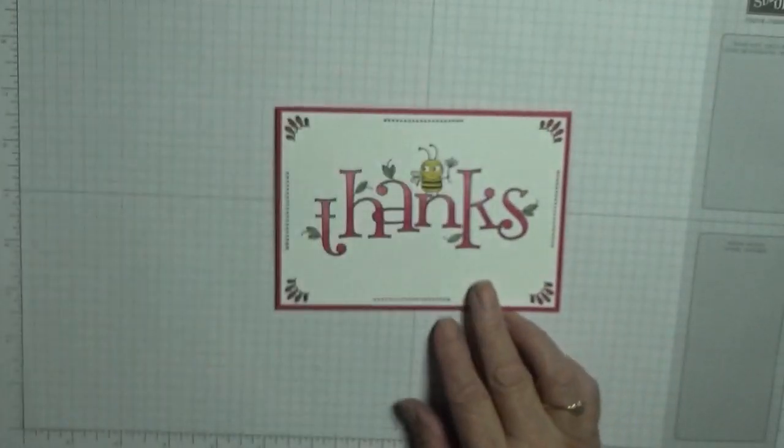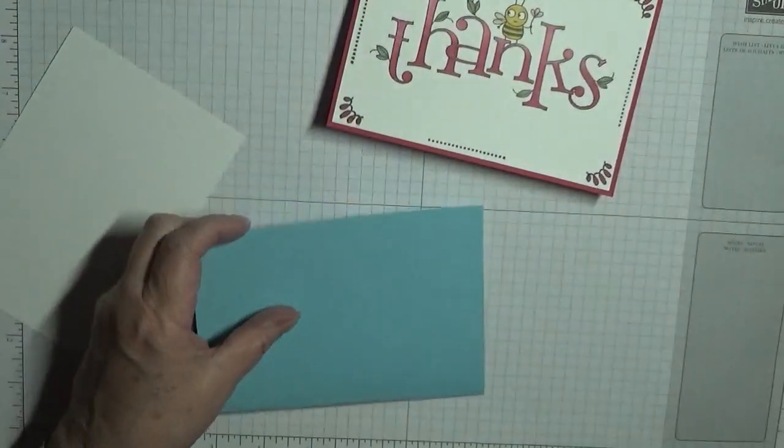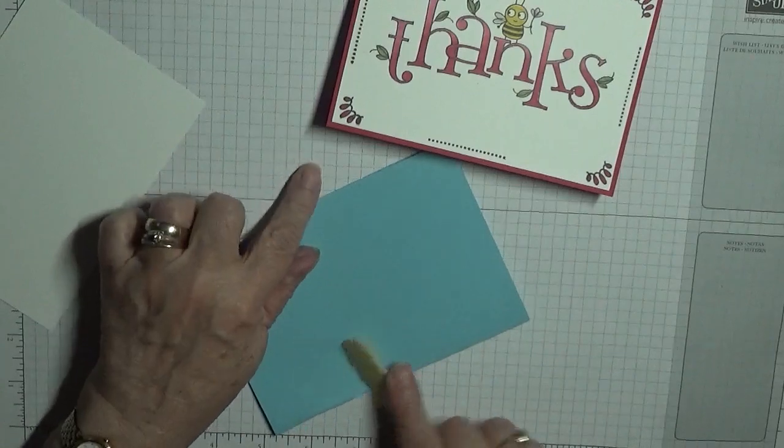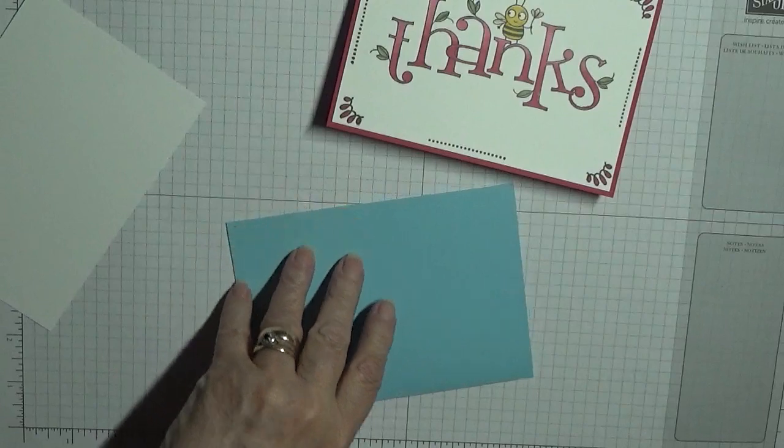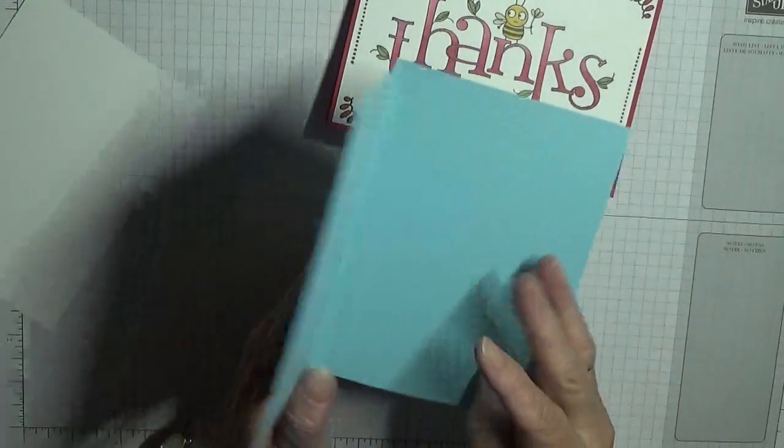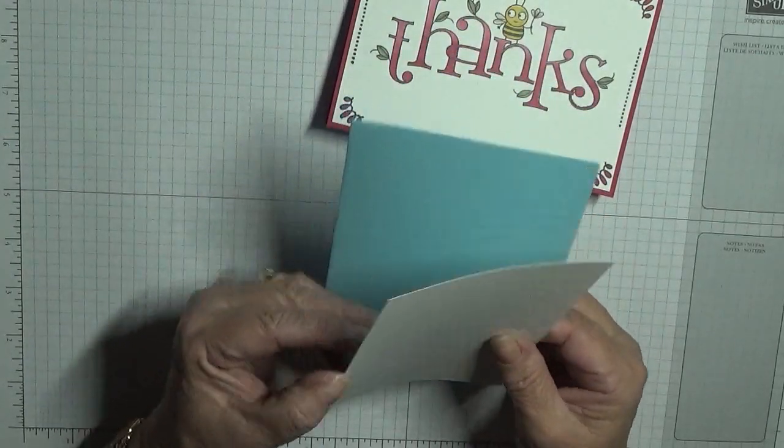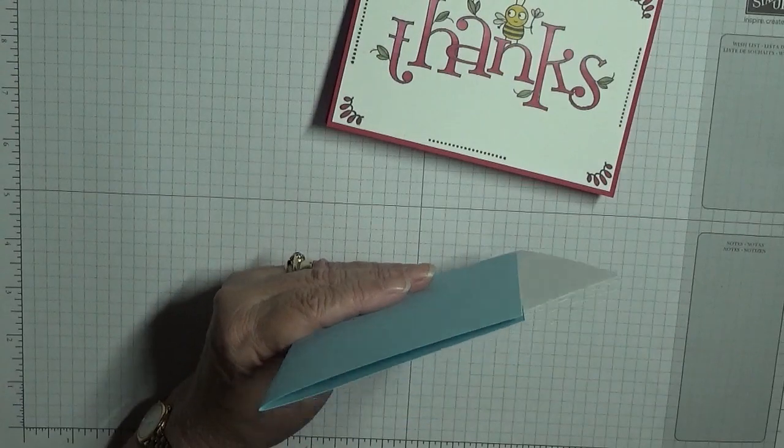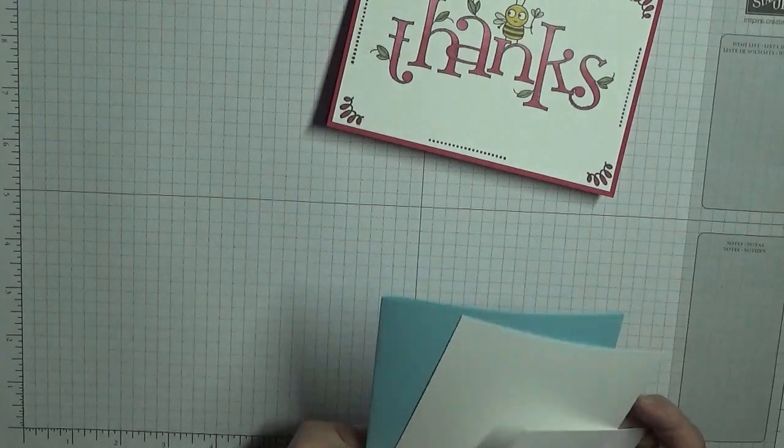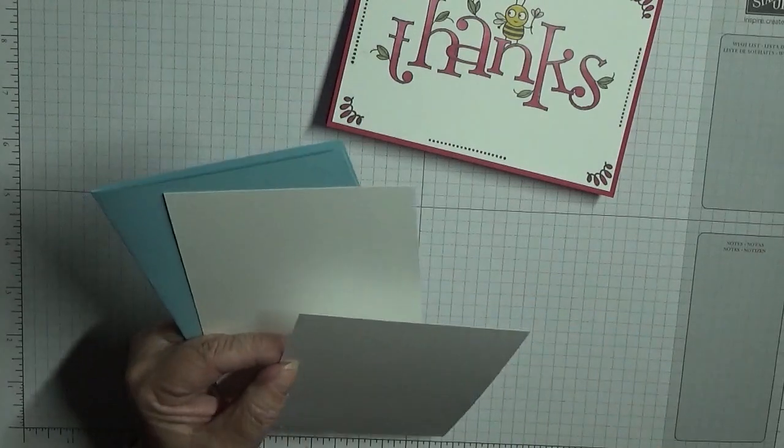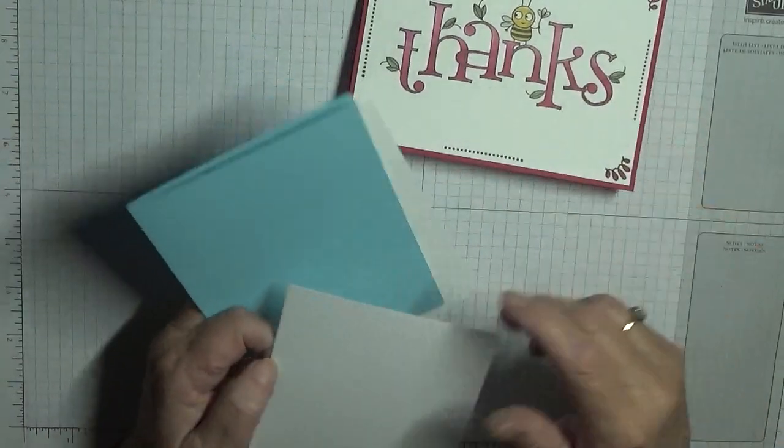The cardstock I'm going to change to Balmy Blue. You need a piece of cardstock eight and a quarter by five and seven eighths, scored at four and one eighth and burnished, and two pieces of Whisper White, one for the inside and one for the outside.